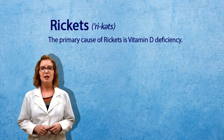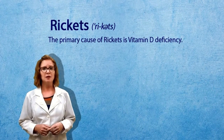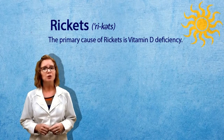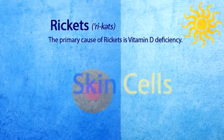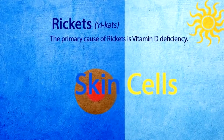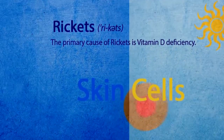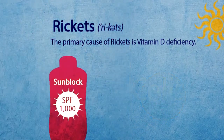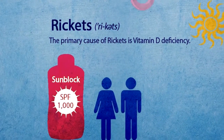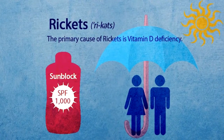Rickets. The primary cause of rickets is vitamin D deficiency. Sunlight, especially ultraviolet light, lets human cells convert vitamin D from an inactive to an active state. The use of strong sunblock or too much covering up in sunlight